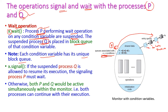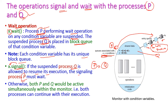For the signal operation — x dot signal — with respect to condition x, if the suspended process Q is allowed to resume, the process P resumes process Q. Q is actually in the block queue and is now resumed. Then the signaling process P must wait and will go to the block queue; otherwise both P and Q would be active simultaneously within the monitor.